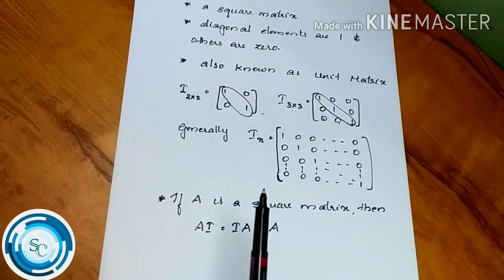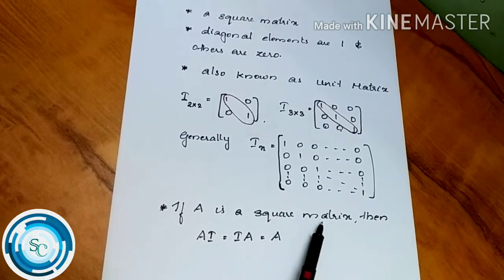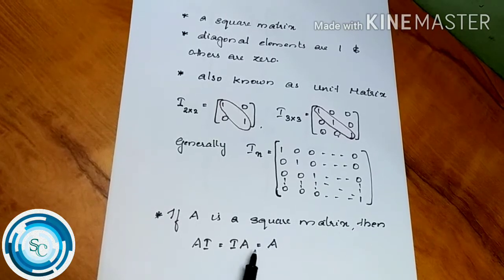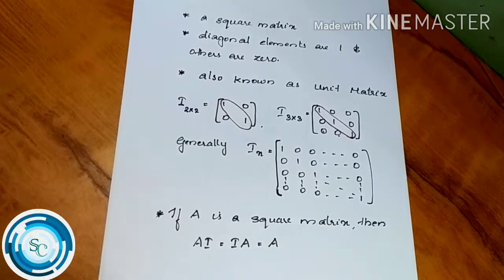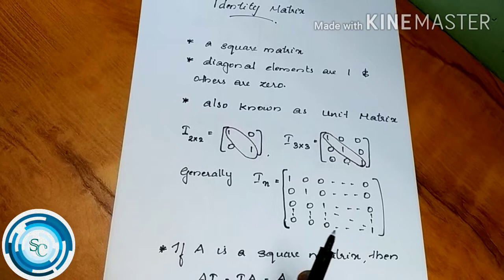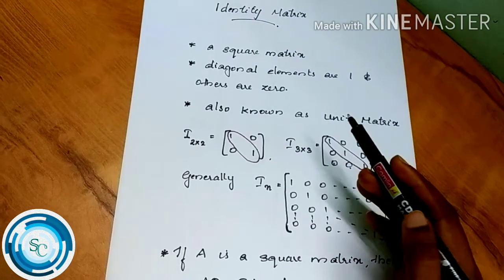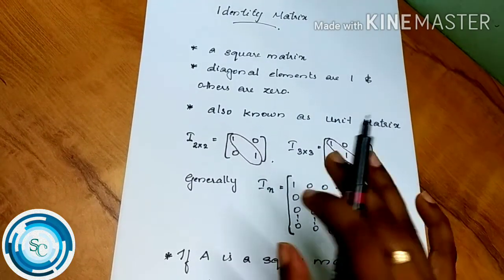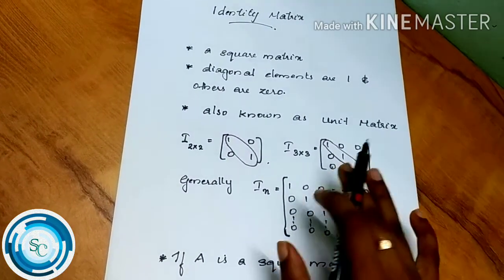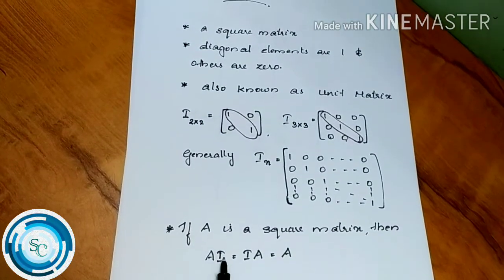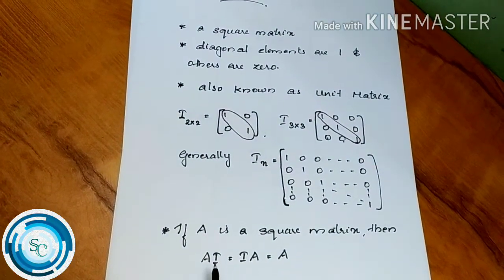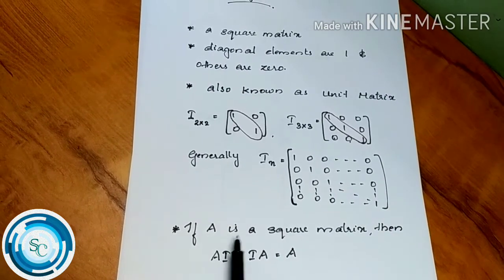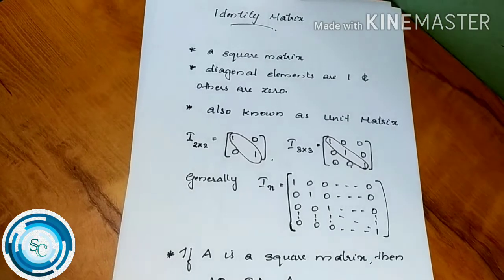Now, if A is a square matrix, then A times I equals I times A equals A. The identity matrix acts like the number 1 in multiplication — it is the multiplicative identity for matrices.